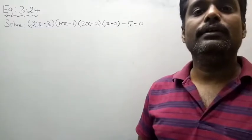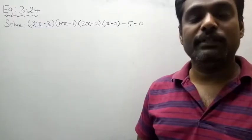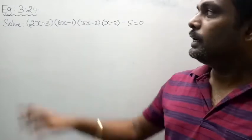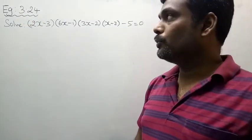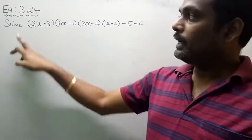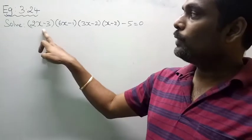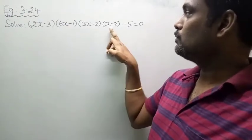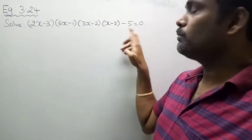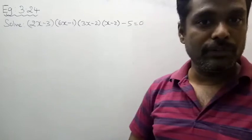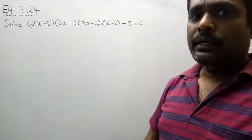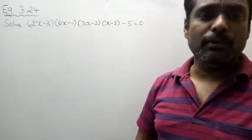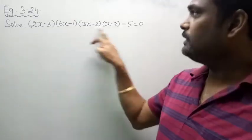Hi, my dear students. Today we will discuss Chapter 3, Theory of Equations, Example number 3.24. Solve: (2x - 3)(6x - 1)(3x - 2)(x - 2) - 5 = 0. Note: there was a mistake in the question in the textbook, which I have corrected here.